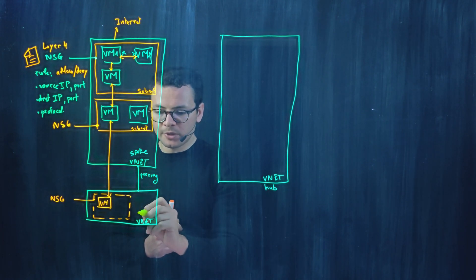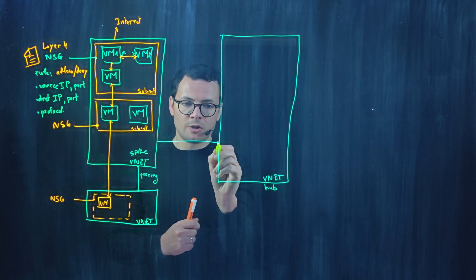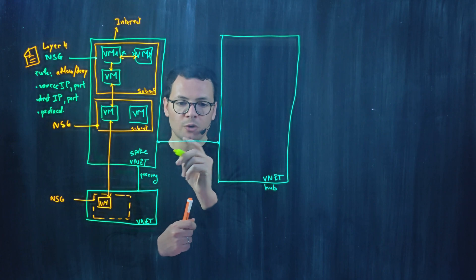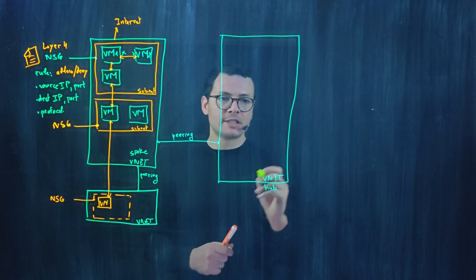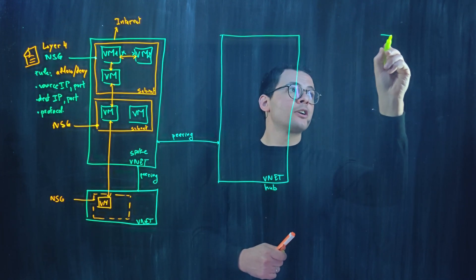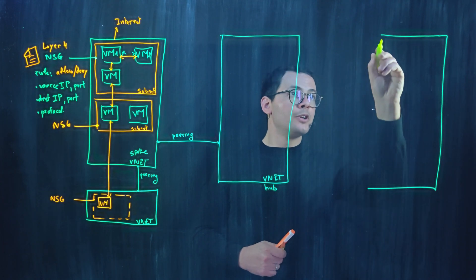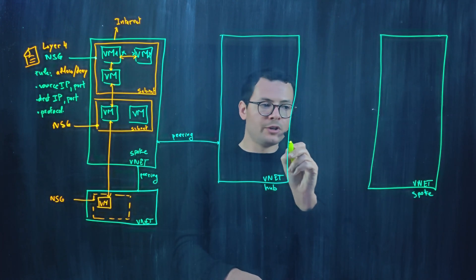This is a spoke subnet, and the spokes are connected to the hub network through VNet peering. That will allow for communication on both sides. And because this is a hub, it would be connected to one or multiple subnet spokes. That means I can have here another virtual network that would be also peered with the hub network. Let's say this is our spoke VNet, and it would be also peered with the hub.